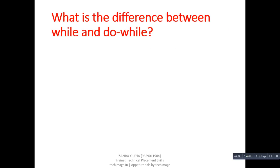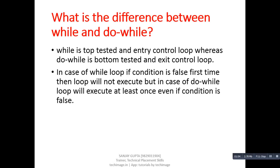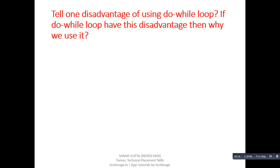Next question: What is the difference between while and do-while? Answer: while is top-tested and entry control loop, whereas do-while is bottom-tested and exit control loop. In case of while loop, if condition is false first time then loop will not execute, but in case of do-while loop will execute at least once even if condition is false.